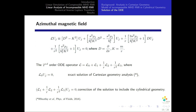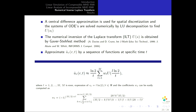For the azimuthal magnetic field case, we have a second-order ODE, again with the first part representing the planar case and a correction for the cylindrical case. To solve these equations, we use central difference approximation for spatial discretization and LU decomposition. We then apply the numerical inverse Laplace transform using the Gaver-Stehfest method, which approximates the inverse transform by a sequence of functions. An important point is that the integration along the Bromwich contour gives results in the real part of the complex plane, and we do not deal with singularities of that contour using the numerical inverse Laplace transform.